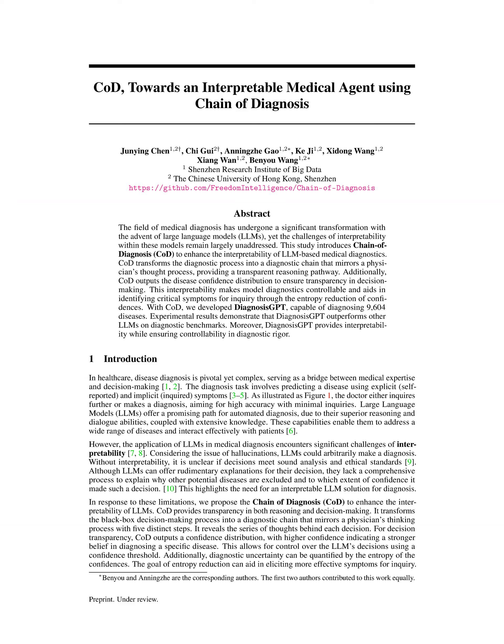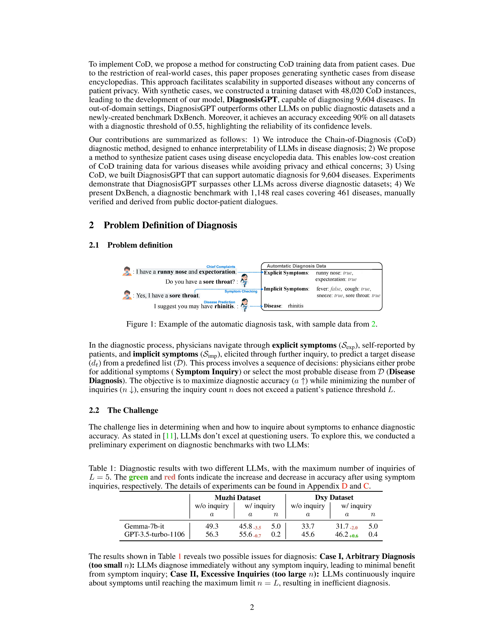Additionally, COD reduces diagnostic uncertainty through an entropy reduction process, allowing for more effective symptom inquiries that lead to quicker and more accurate diagnoses. By synthesizing training data from disease encyclopedias, COD also scales efficiently to support a wide range of diseases while maintaining patient privacy, ultimately achieving over 90% accuracy across various datasets with fewer inquiries compared to traditional methods.